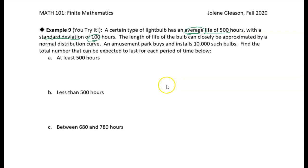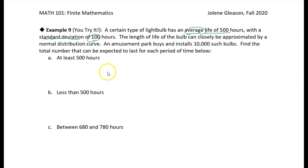The proportion of light bulbs expected to last would be the probability — it's the relative frequency. So if we can find the probabilities for these durations for light bulb life, then we can multiply by the 10,000 and get the number of bulbs we would expect to last for that period.